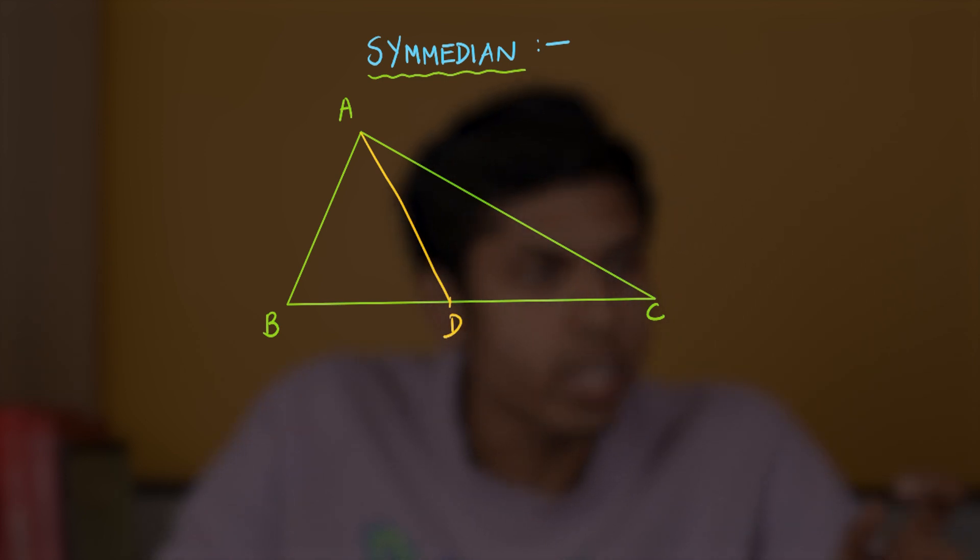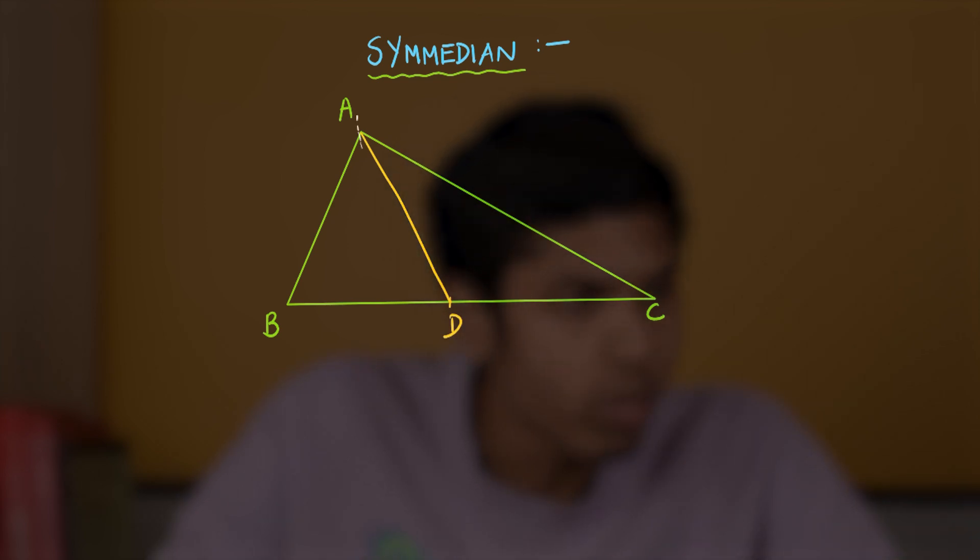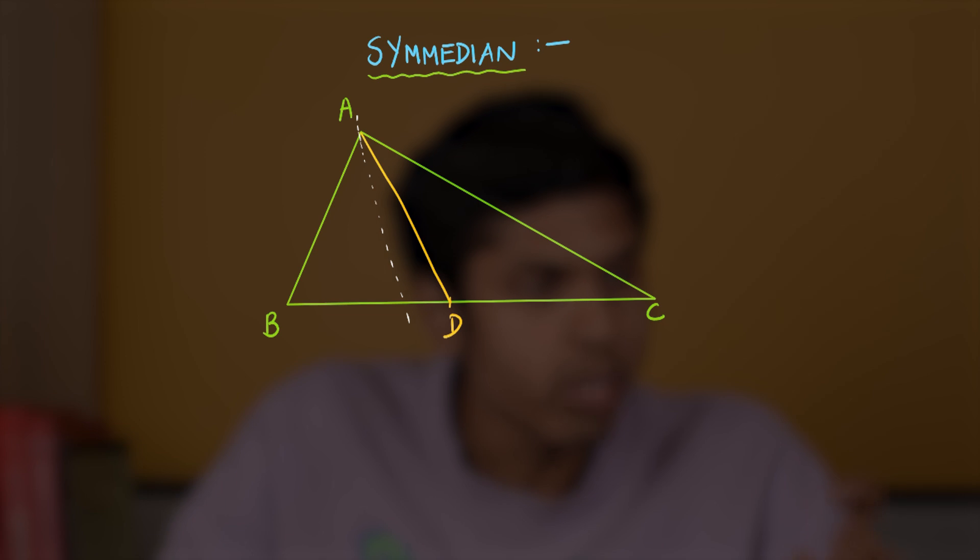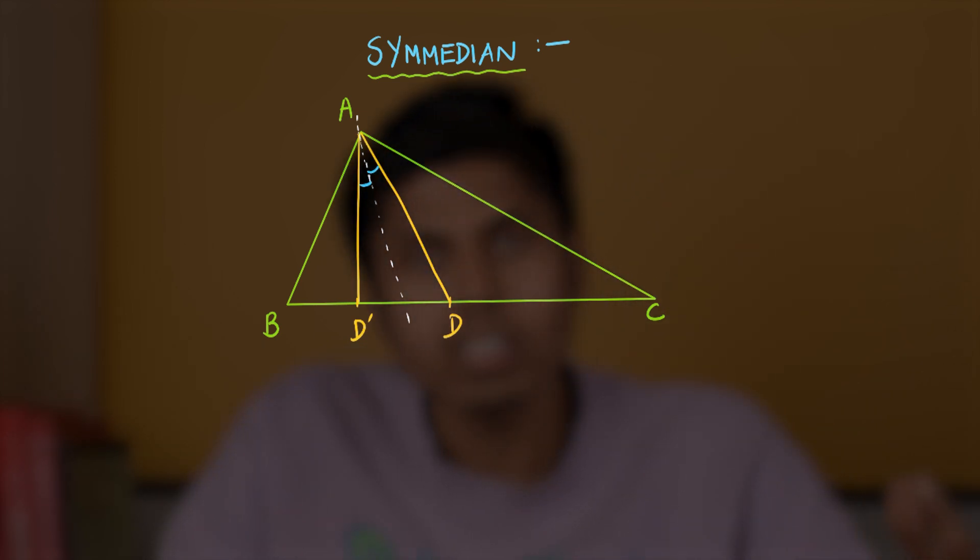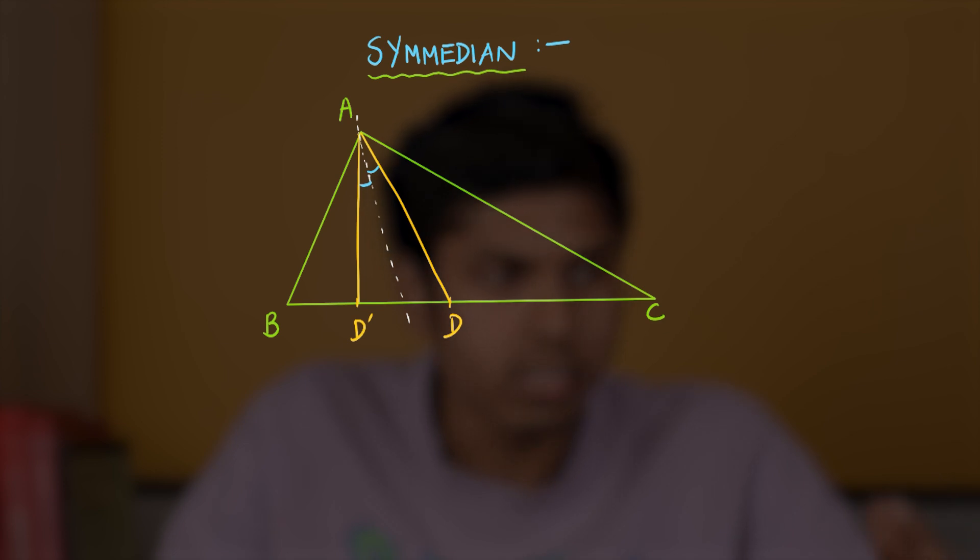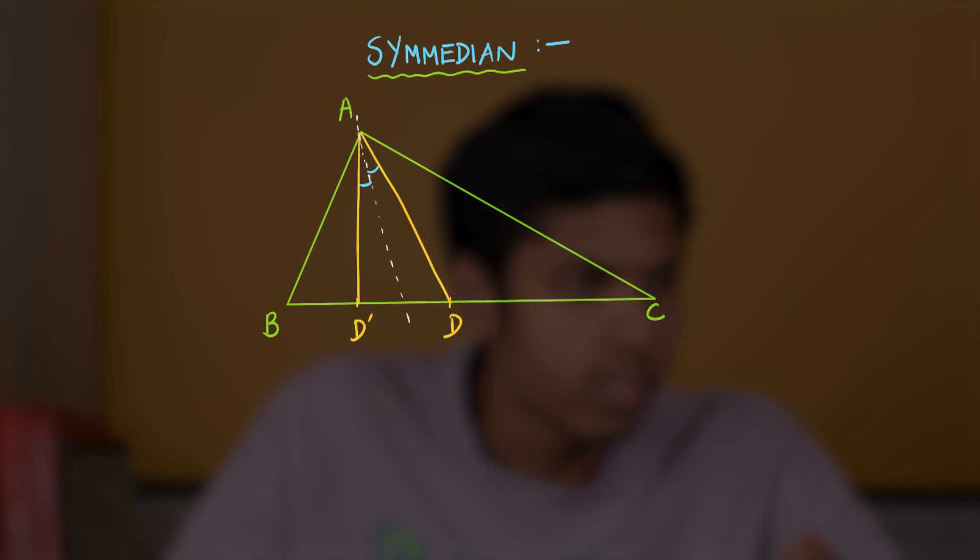Now, in order to obtain A-C-median, we reflect it about the angle bisector at A. Reflecting AD about the angle bisector at A, we get the A-C-median. This can be equally stated as a line segment that makes equal angle with the angle bisector to that of median, but in the opposite side. This is called as A-C-median.